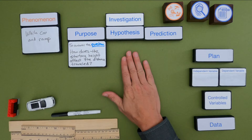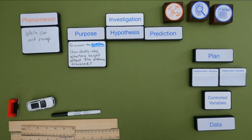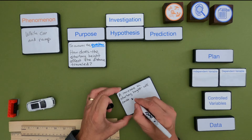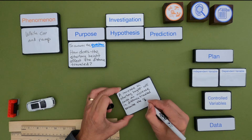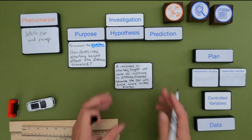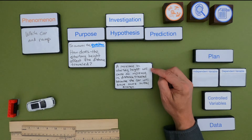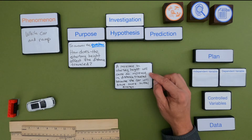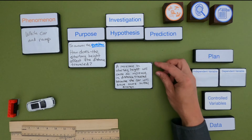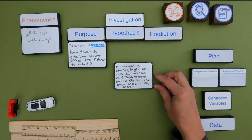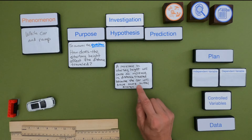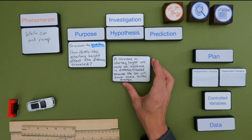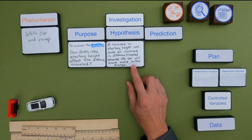Next I want to write down a hypothesis. A good hypothesis has two portions: what you think, and then an explanation following the word 'because.' My hypothesis is: an increase in the starting height will cause an increase in distance traveled, because the car will have more initial energy. So as I move it up the ramp it's going to have more energy. It's not just a guess — it's what I think is going to happen and why.